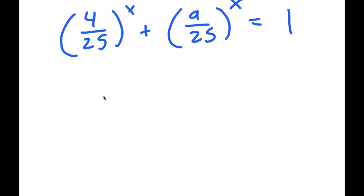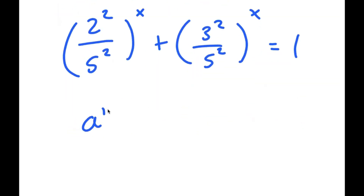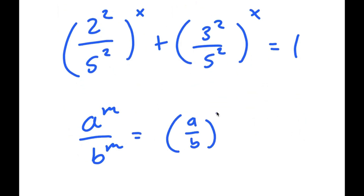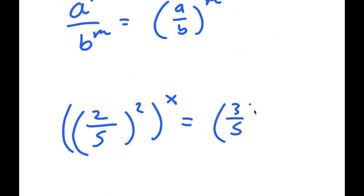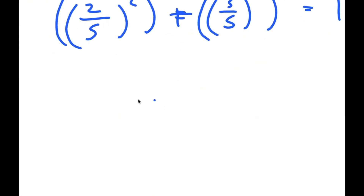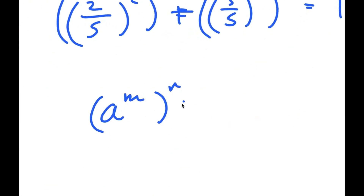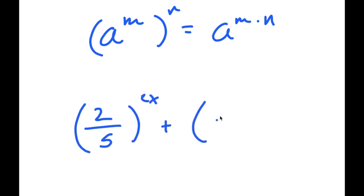From here, I can rewrite 4 over 25 as 2 squared over 5 squared, and I can rewrite 9 over 25 as 3 squared over 5 squared. Using the property that a to the power of m over b to the power of m equals a over b to the power of m, 2 squared over 5 squared turns into 2 over 5 squared, and 3 squared over 5 squared turns into 3 over 5 squared. Then, using the property that a to the power of m to the power of n equals a to the power of m times n, the 2 and x multiply, giving 2 over 5 to the power of 2x plus 3 over 5 to the power of 2x is equal to 1.